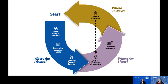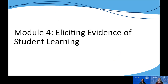Module three introduced us to the three critical questions that we want students to be able to answer as part of the formative assessment process: Where am I going? Where am I now? And where to next? When students are able to answer these three questions, it helps create student ownership and foster self-regulation that are critical to the learning process. Module three focused on helping students answer the first question — where am I going — and talked about how important it is for teachers to start with the standards and then develop, clarify, and share the learning goals and success criteria with students so they know where they are headed.